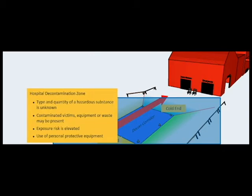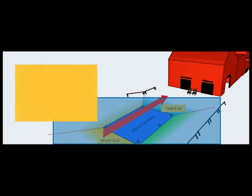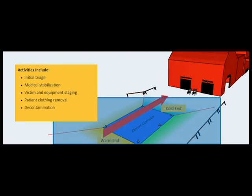In the hospital decontamination zone, a number of activities take place including but not limited to initial triage, medical stabilization, victim and equipment staging, patient clothing removal, decontamination and post decontamination victim inspection. This zone typically ends near the emergency department entrance.